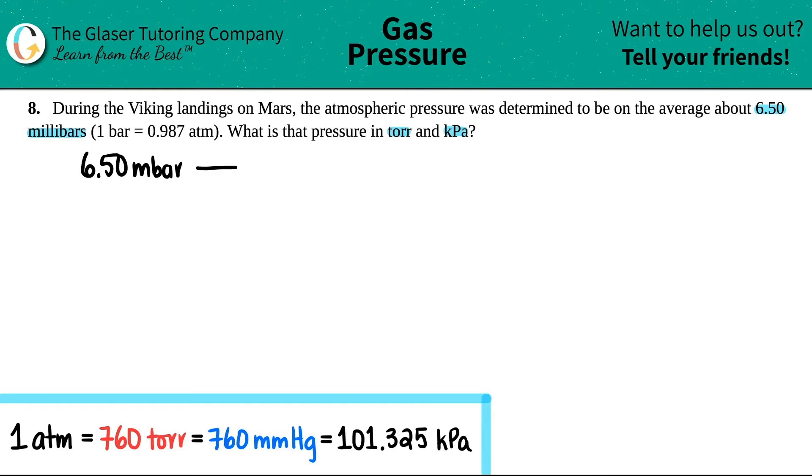We have 6.5 millibars, maybe I'll say mbar, and we need to go to torr. We're going to just times by ratios and then just keep going until we get the unit that we want. But here they give us a piece of information to get from bar to atm, and I listed all of the useful conversions that we can use, but the thing is they gave it to us in bar but we have millibar.